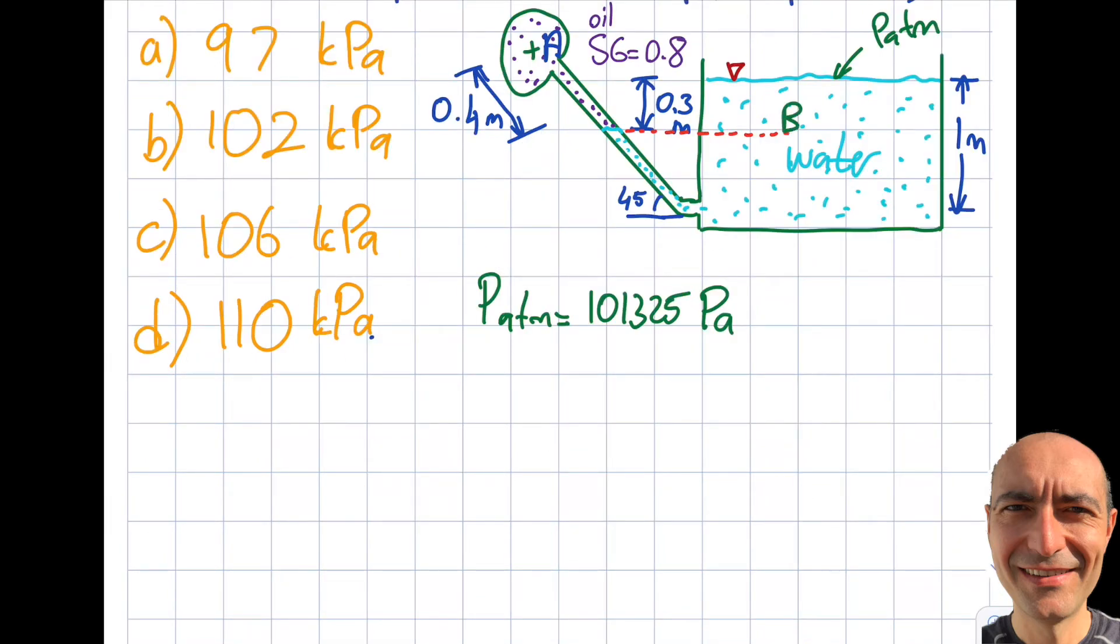Let's call this point B just for the ease of it. P_B will be equal to 101,325 in pascals, plus - why plus? Because I'm going down - 1000, that is the density of water kilogram per meter cube. G is 9.81, so basically what I'm doing is rho*g*h.